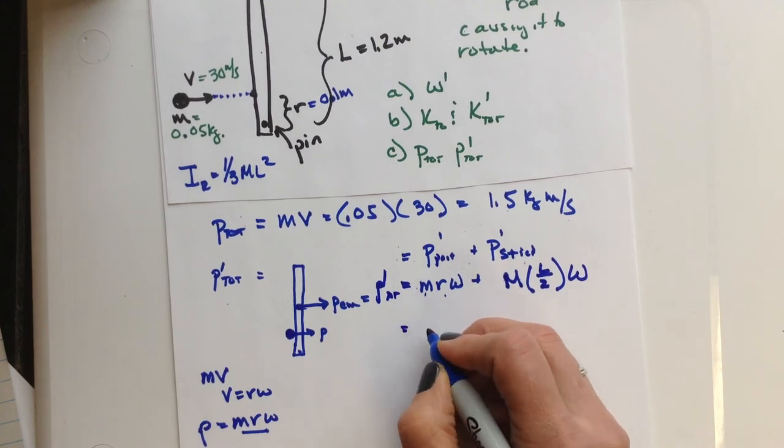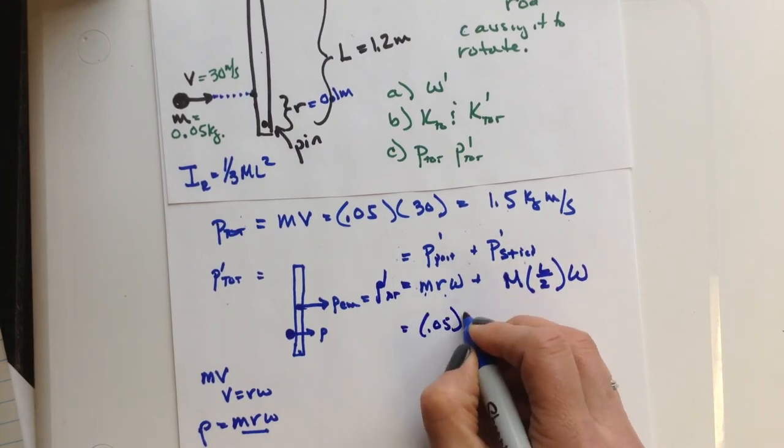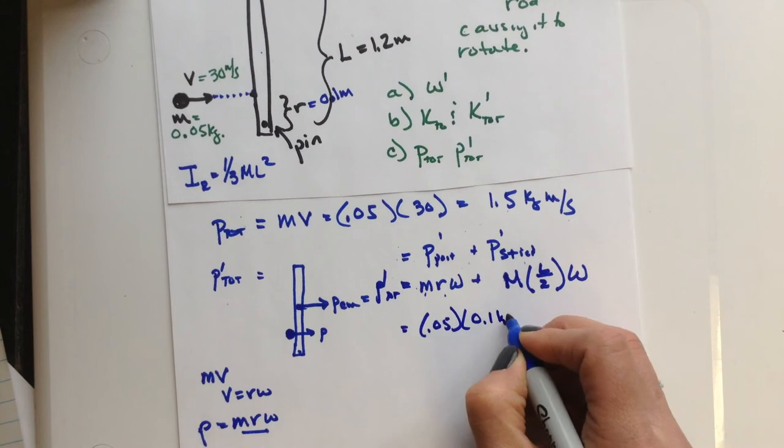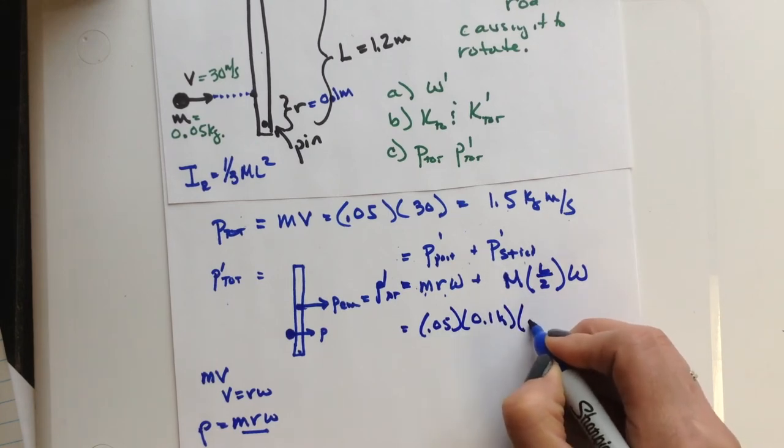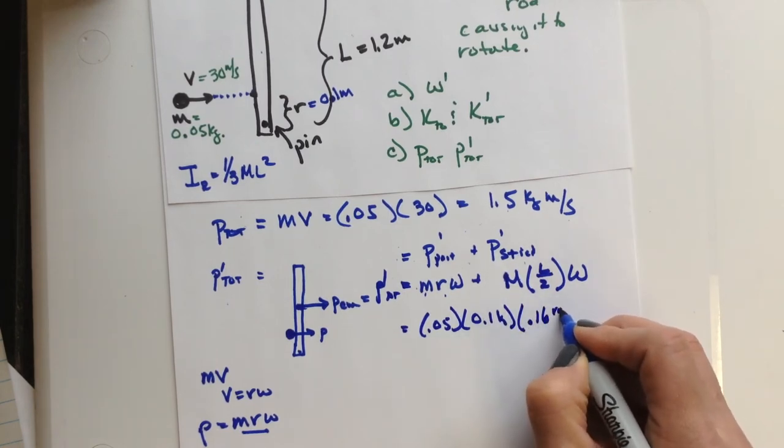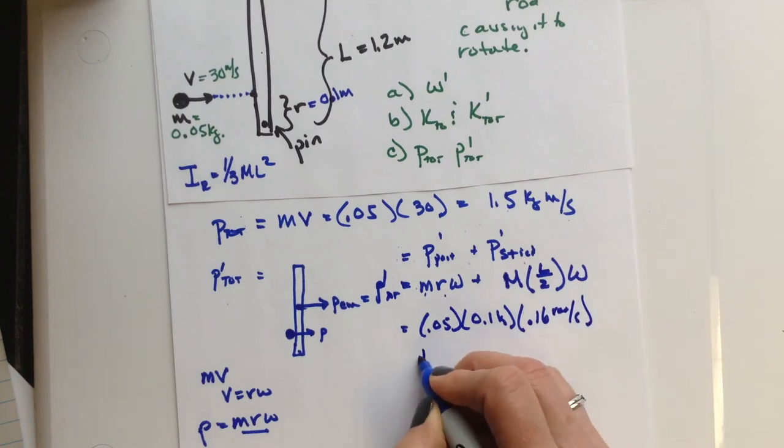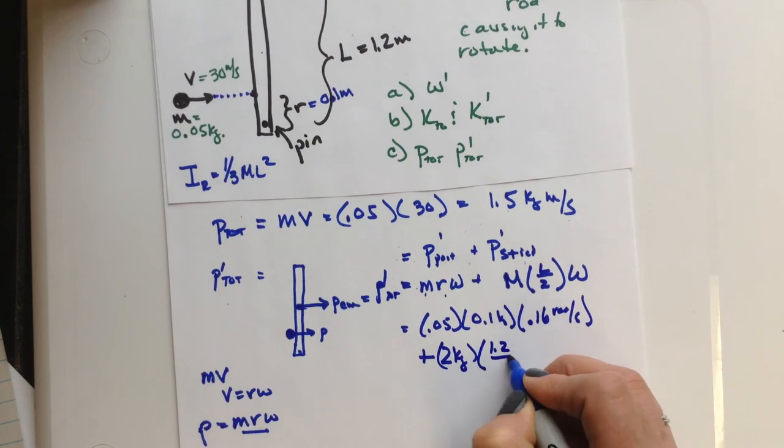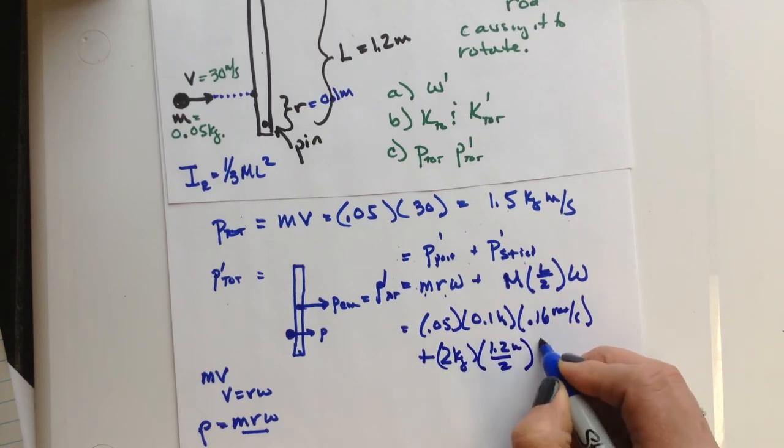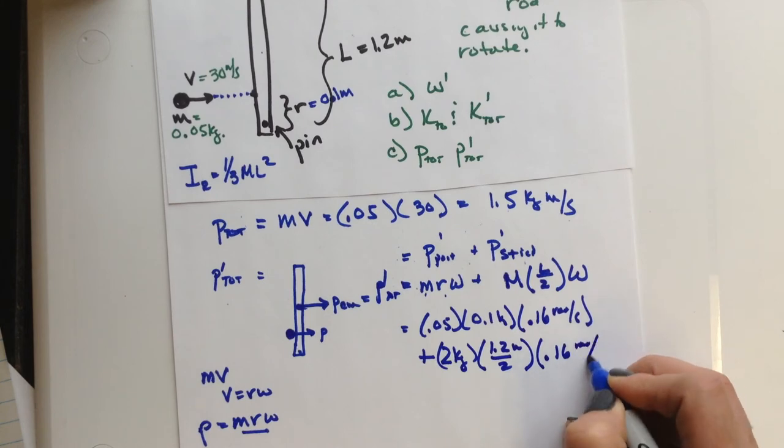So now we're going to substitute in some numbers here, and I'll write it out just so you can follow along. 0.1 kilograms. Remember, our angular speed was about 0.16 radians per second, plus the mass of the stick was 2 kilograms. This will be 1.2 meters divided by 2, and then the 0.16 radians per second.